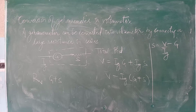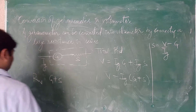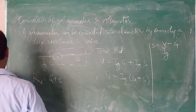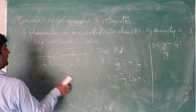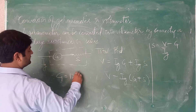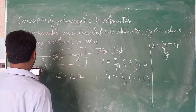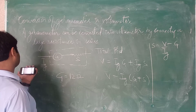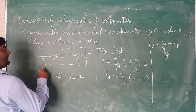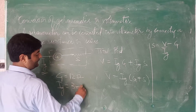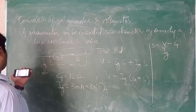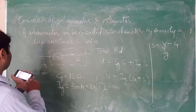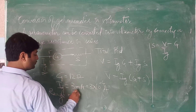Here we are solving NCERT problem 4.27. The problem: a galvanometer has a resistance coil of 12 ohm, so G equals 12. The meter shows full scale deflection at 3 milliampere, so Ig equals 3 milliampere, that is 3 multiplied by 10 to the power minus 3 ampere. How will you convert the galvanometer into a voltmeter of range 0 to 18 volt?